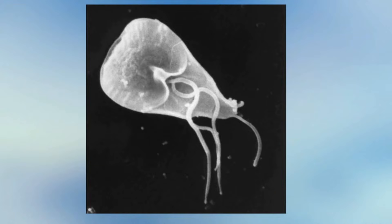Ciliates move with hair-like structures. Take a look at this video of the amoeba and the paramecium, which is a ciliate moving.